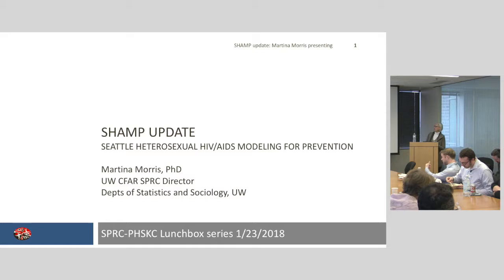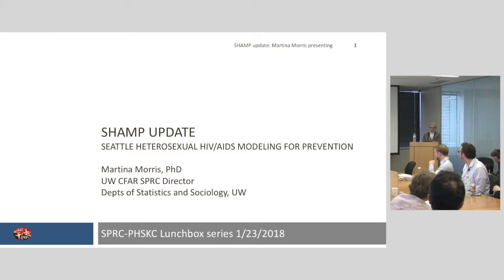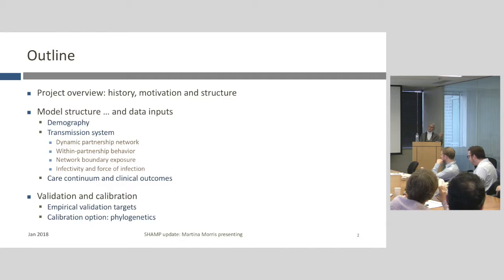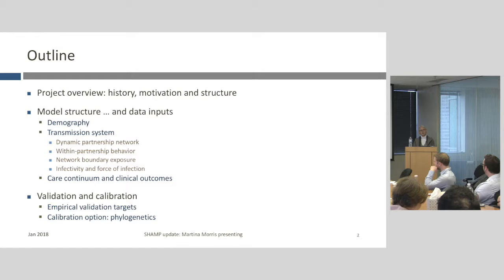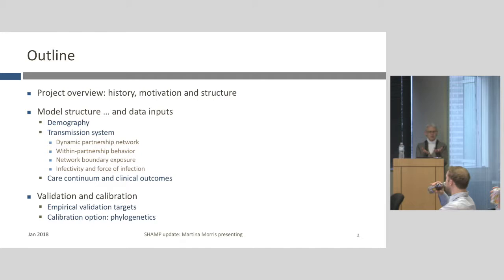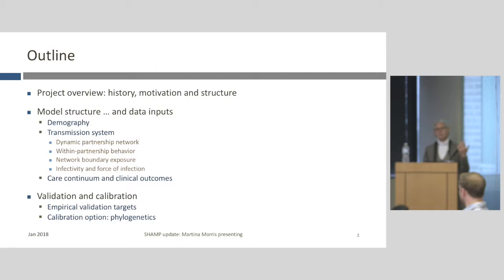This update is probably going to be both more and less than you'd hoped for. This is the SHAMP Project — the Seattle Heterosexual HIV AIDS Modeling for Prevention Project. SHAMP is an outgrowth of WAMP, which is Darcy's dissertation project, the Washington HIV Modeling for Prevention. All of that is an outgrowth of CAMP, the Coalition for Applied Modeling and Prevention — a joint effort by the University of Washington and Emory University with CDC funding to develop tools for modeling the spread of HIV in populations, informed by local data, so it can be used by local public health departments for planning and prevention.